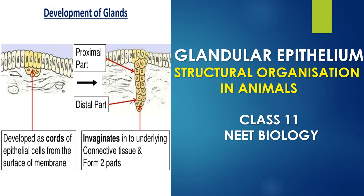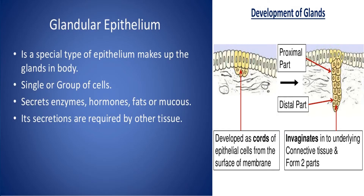Welcome to Arcas Neat Biology. Today let us discuss the glandular epithelium. It is a special type of epithelium which makes up the glands in our body. They may exist singly or in groups, and the major role of this gland is to secrete either enzymes, hormones, fat, or simply mucus. Its secretions are required by other tissues.